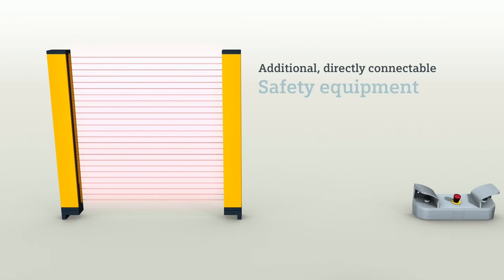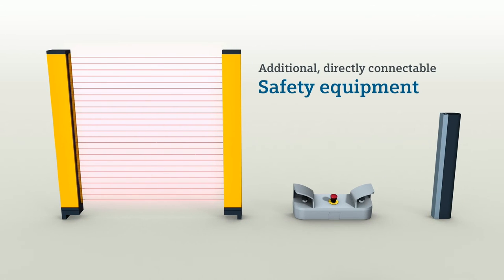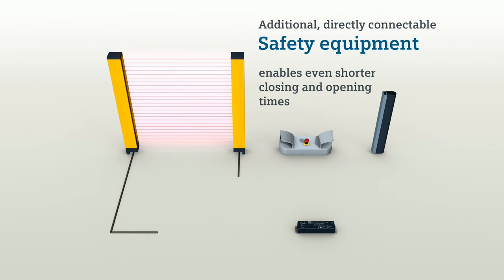You achieve even shorter closing and opening times with additional safety equipment, such as light curtain, safety edge, or two-hand operation. This safety equipment can be directly connected to the C-Door controller in conformance with the standard.